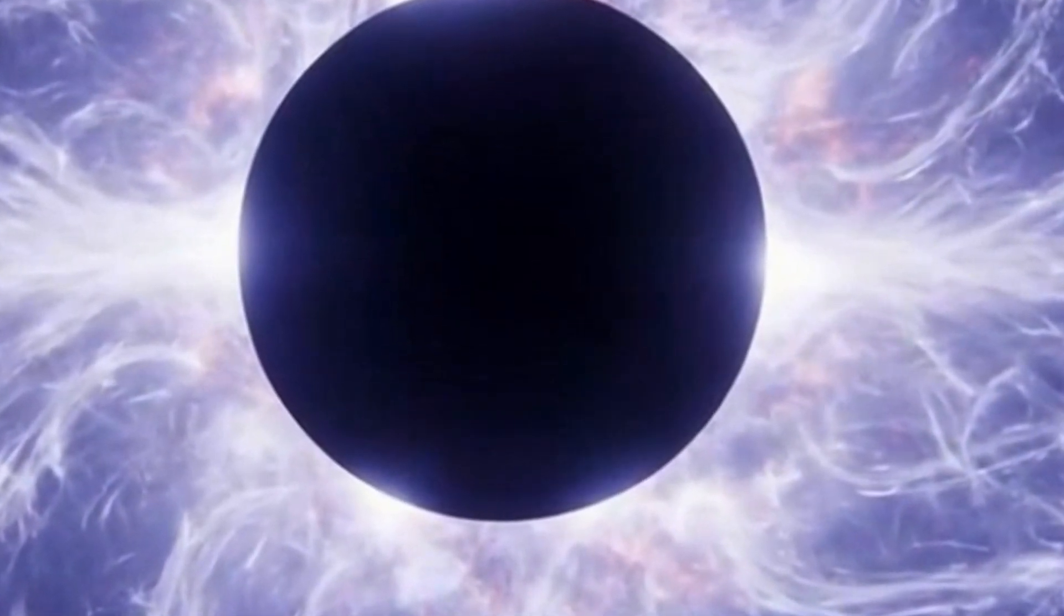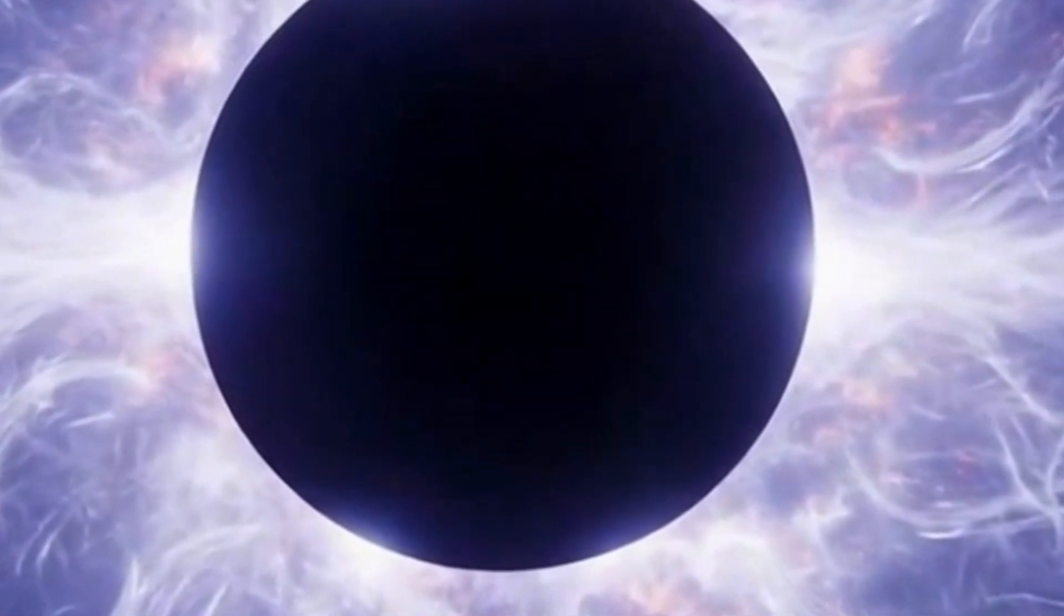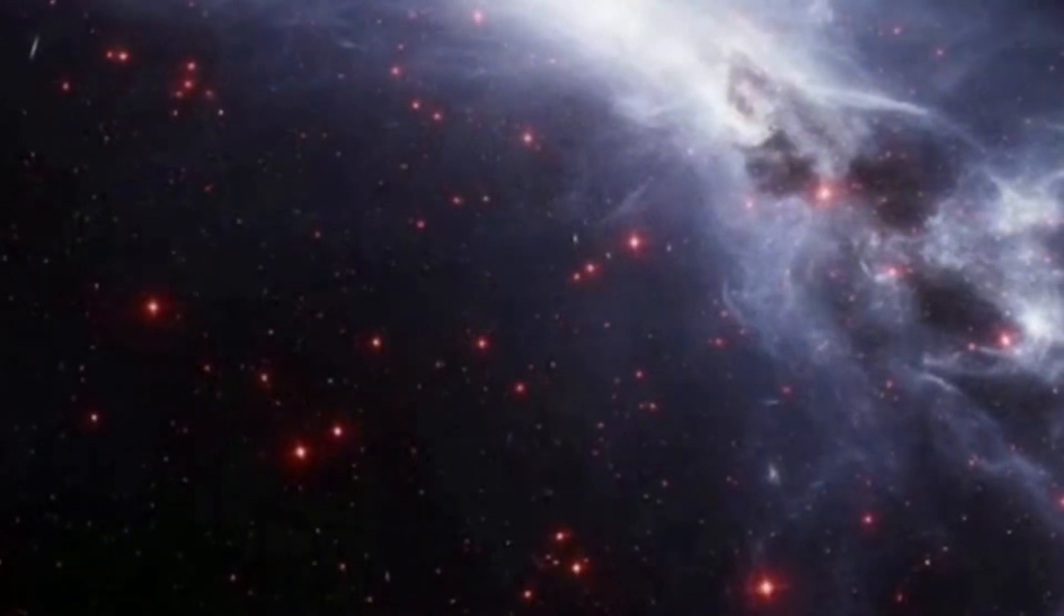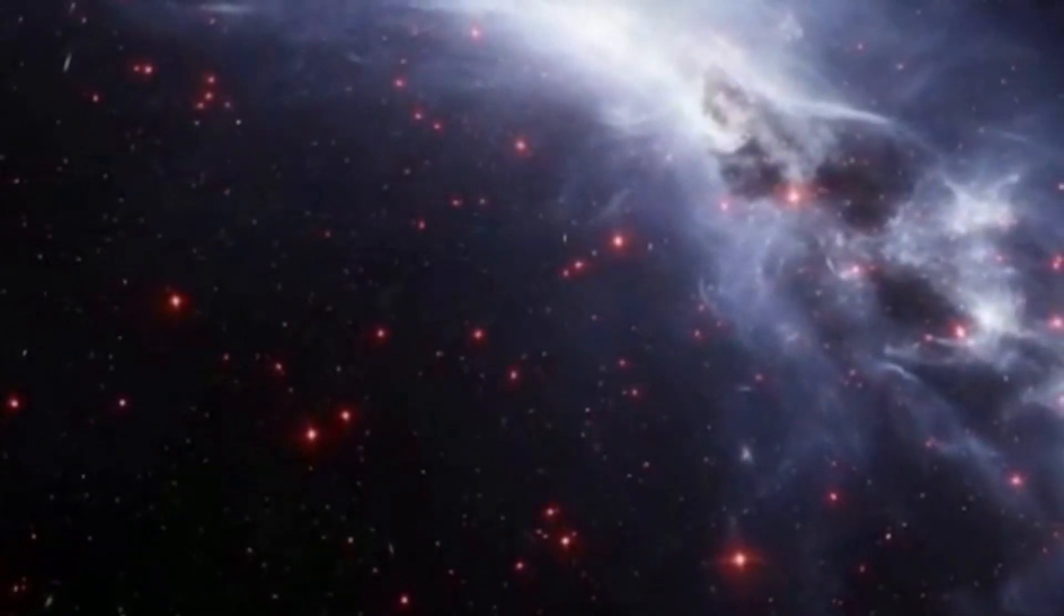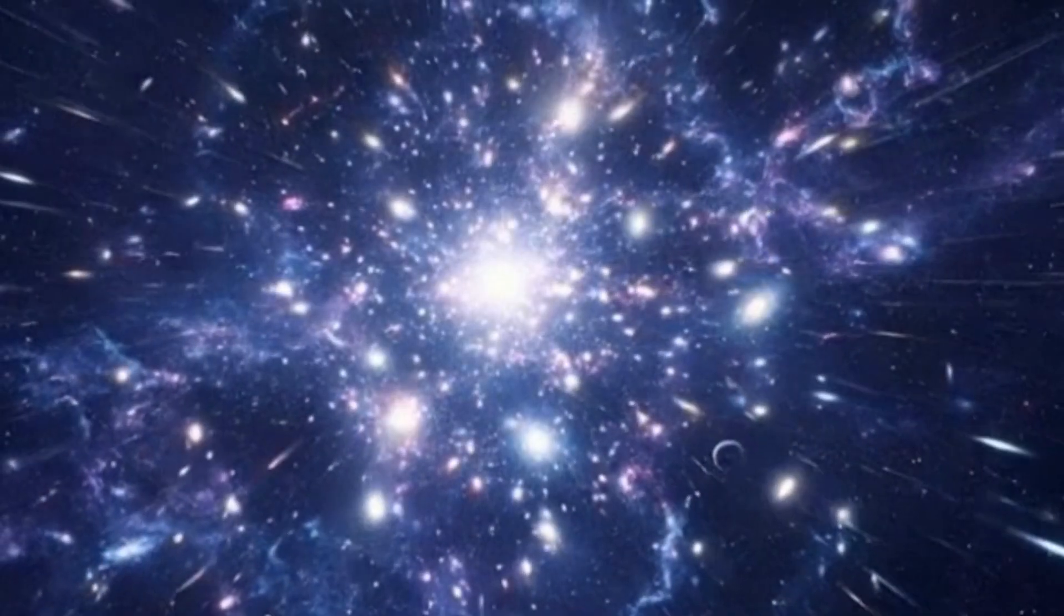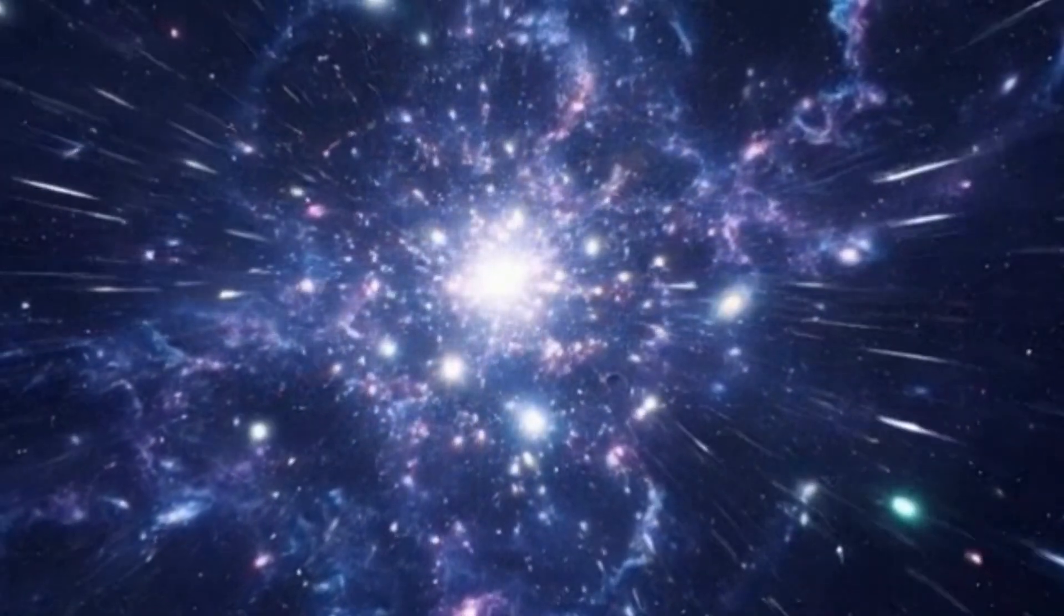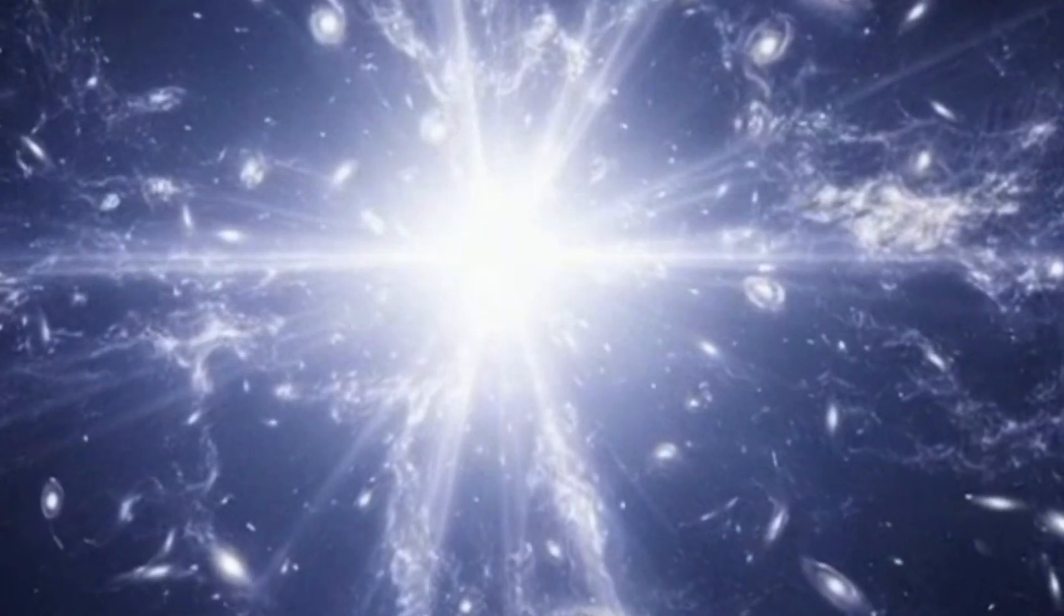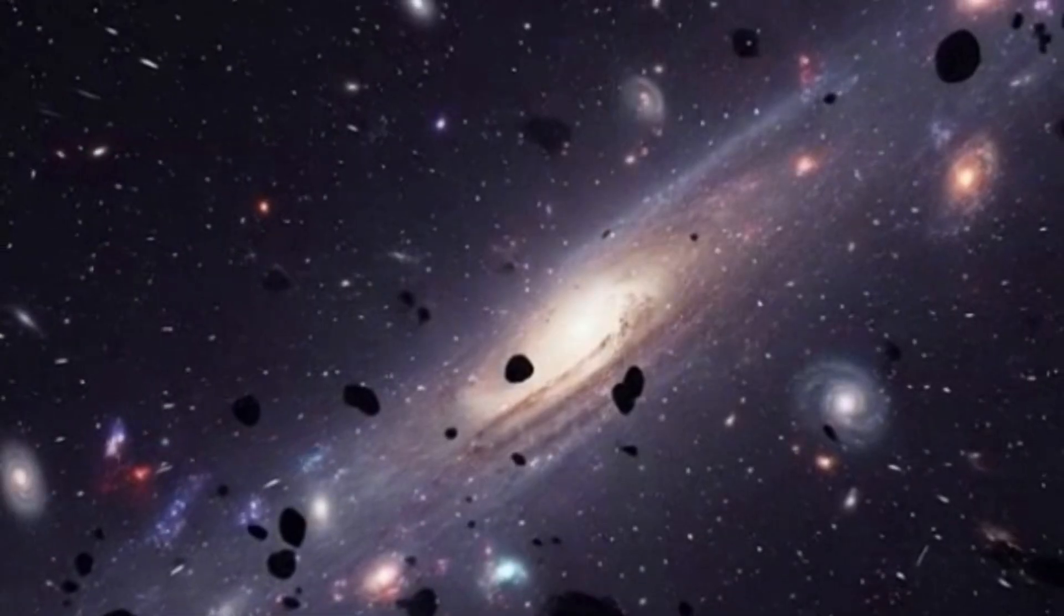But the James Webb Space Telescope has uncovered something that doesn't fit that pattern at all. Deep in the early universe, Webb identified three galaxies so extreme that they seem almost impossible. Spectroscopic data, essentially the fingerprints of light from these systems, revealed something astonishing. These galaxies appeared to have turned nearly 100 percent of their surrounding material into stars. That's not just unusual, it's supposed to be impossible. According to our current models, no known process could convert all available matter into stars so quickly after the Big Bang.